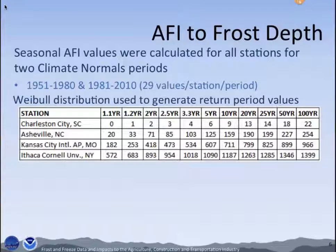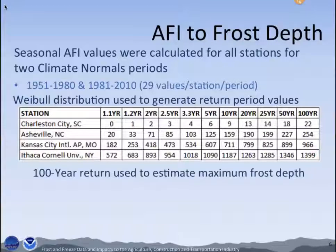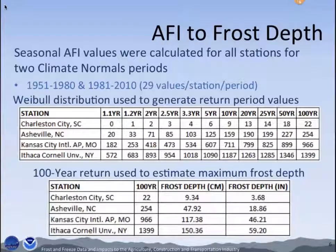We were able to convert these values to frost depth. We were interested in the maximum depth of frost penetration, so we used the 100-year return values. Converting these would give the following frost depths: in Charleston, the depth would be about 4 inches; in Asheville, North Carolina, it's about 19 inches; in Kansas City, it's approximately 46 inches; and in Ithaca, New York, it's about 59 inches.